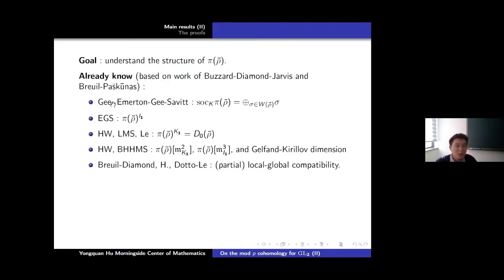The main goal is to understand the structure of this representation π(ρ̄). We already know: first, about the K-socle of π(ρ̄) — the weight part of the Breuil-Mézard conjecture. We know it is isomorphic to a direct sum of σ, where σ runs over all the Serre weights associated to ρ̄. Also by Mézard-Savitt, we know the Iwahori invariants. And by myself and Hou Ran, and then by them for the general case, we know the K1-invariants is exactly equal to D0(ρ̄).